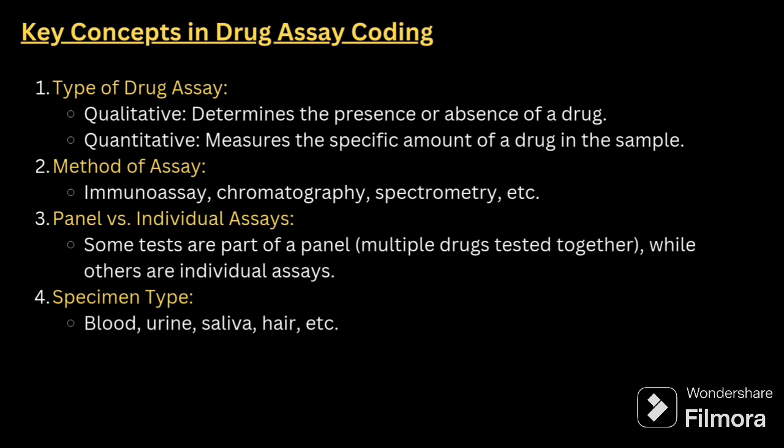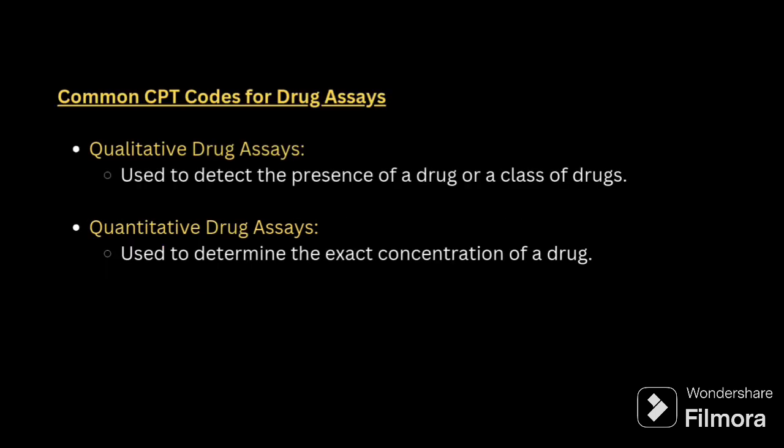The key concept in drug assay is first you have to know the type of drug assay. Types include qualitative or quantitative. Qualitative means the presence or absence. Quantitative means the amount of drug present. And then method and panel versus individual assay — these are the things you have to go through.